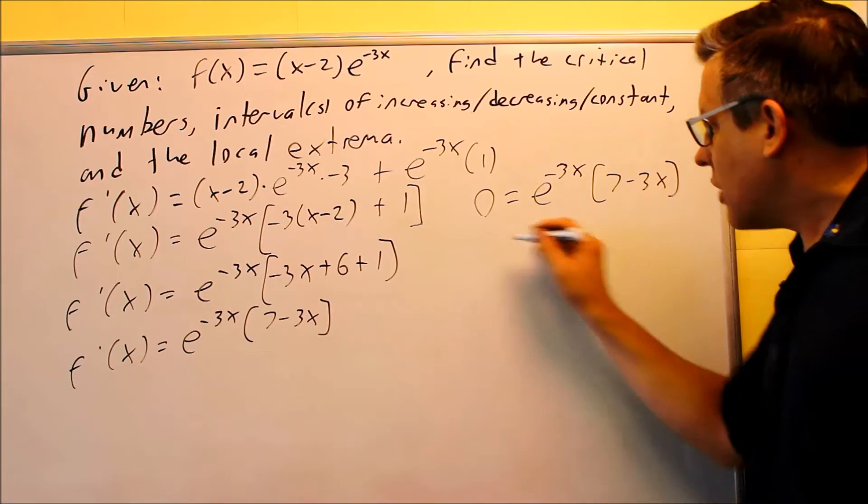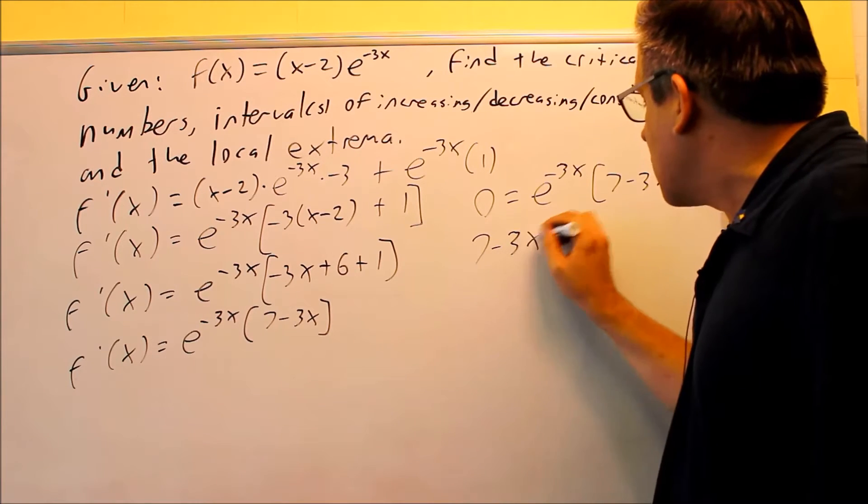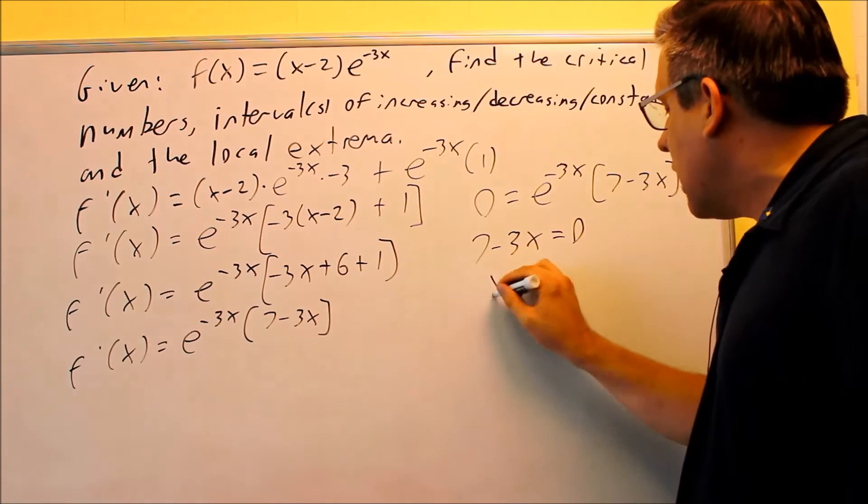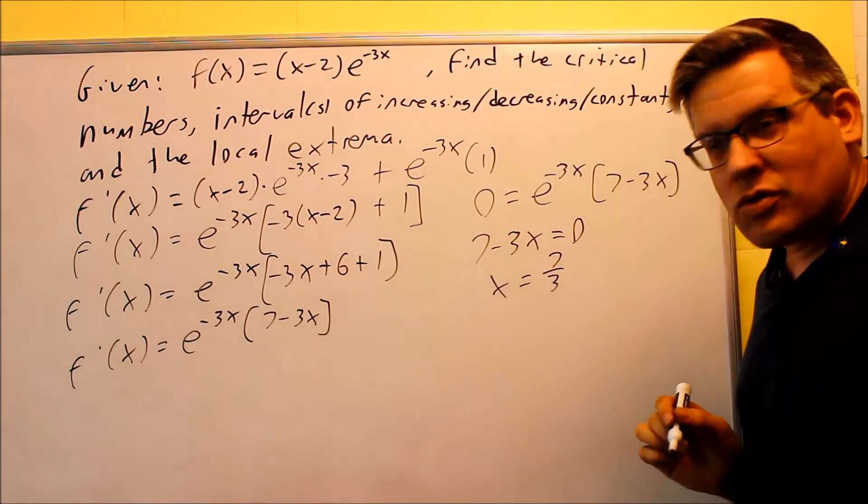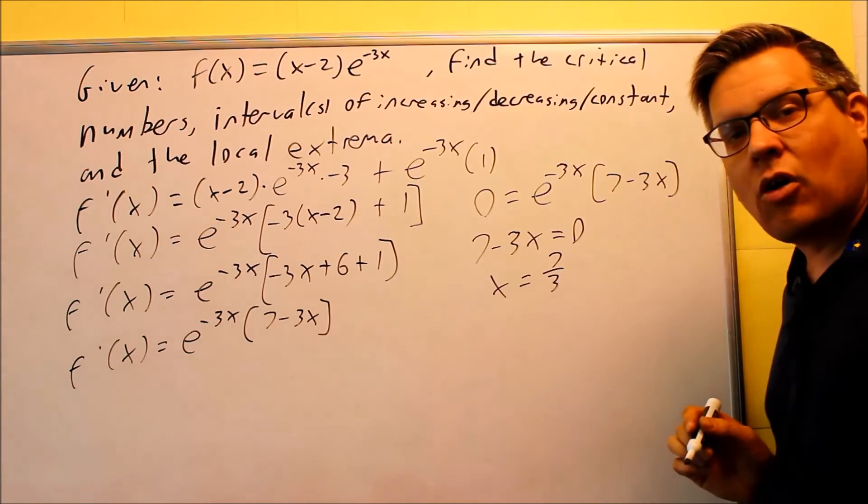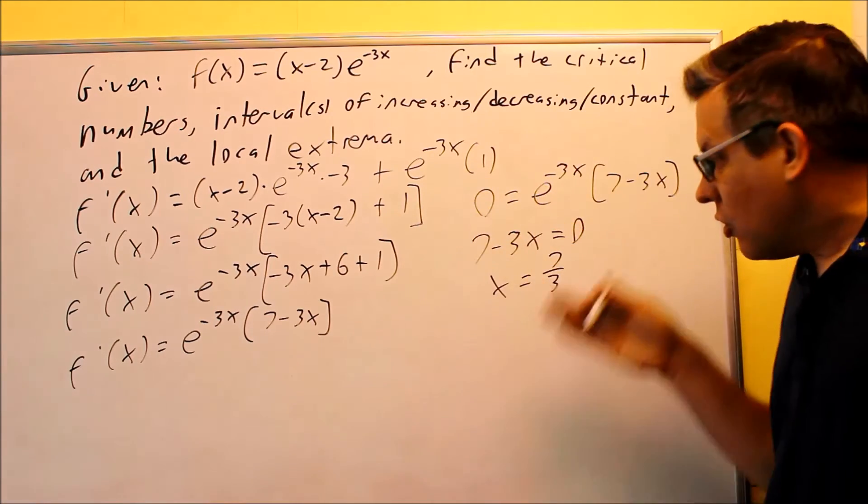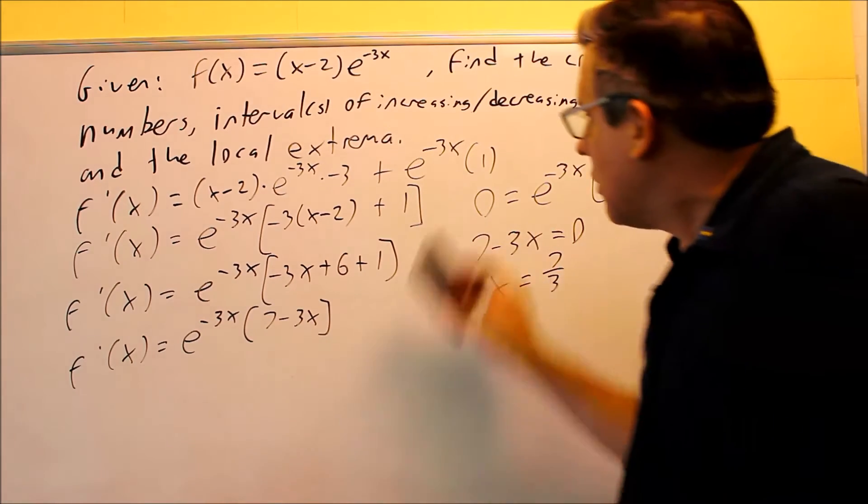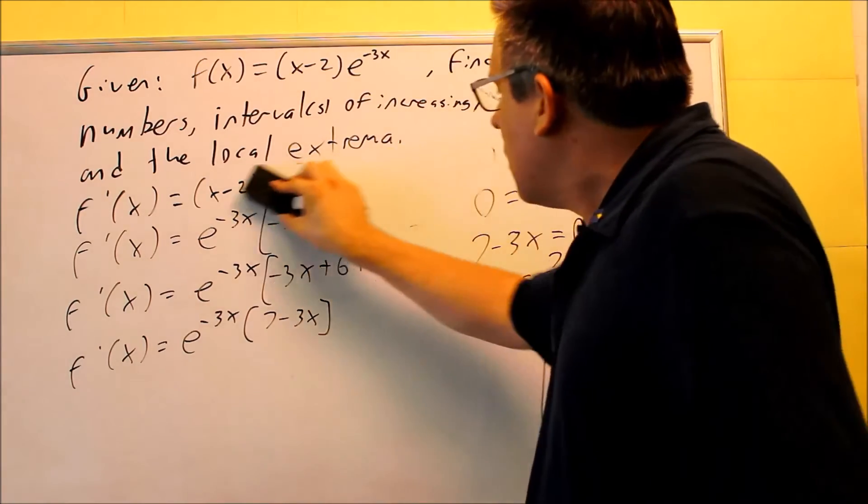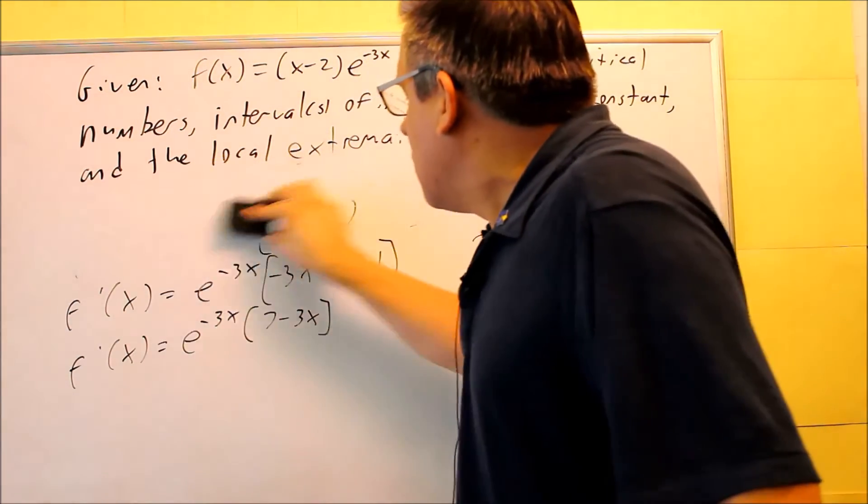However, the second piece we can set equal to 0, 7 minus 3x. Set that equal to 0. And we're going to get x is equal to 7 thirds. So 7 thirds is going to be our only critical number. So what we're going to do next is we're going to make a table with the 7 thirds on it. And we have to pick our test points.